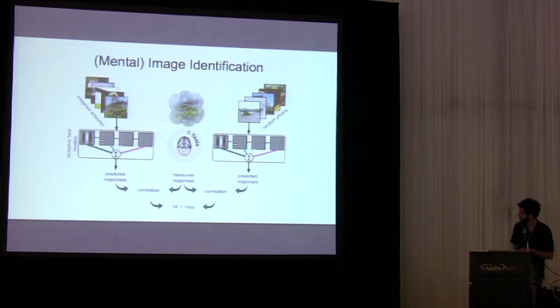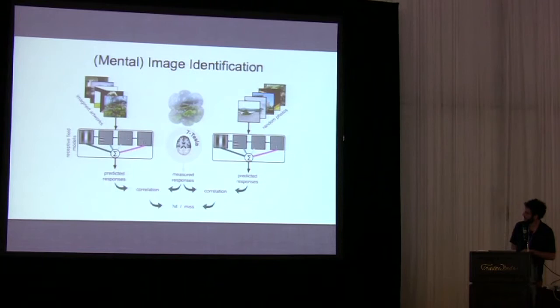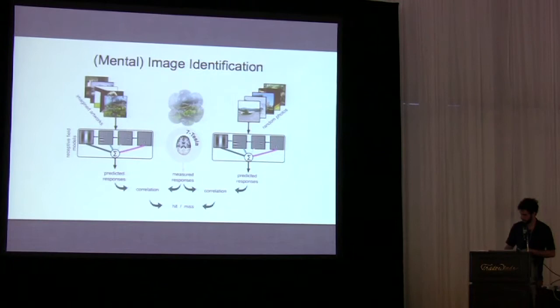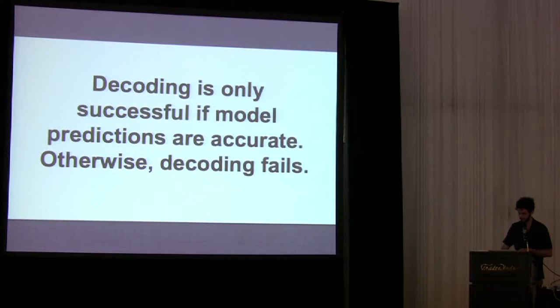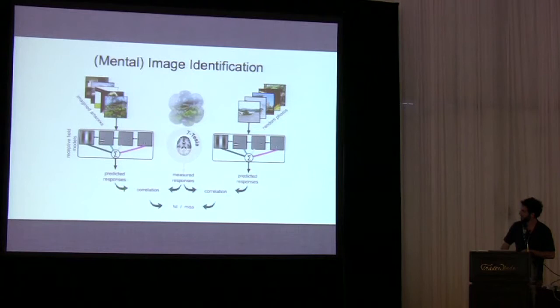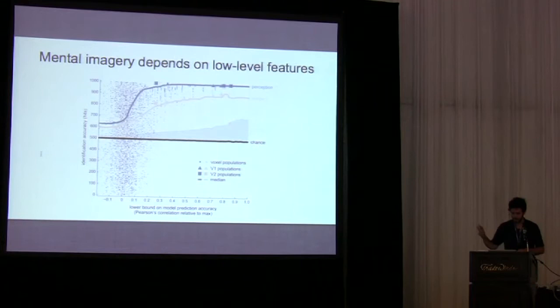I want to stress that this can only work if the encoding model is an accurate representation of what's going on during mental imagery. Otherwise, the model is going to fail. If the model is producing garbage predictions, it's not going to be any more correlated with the measured responses than the model produces when you run a random photograph through it.